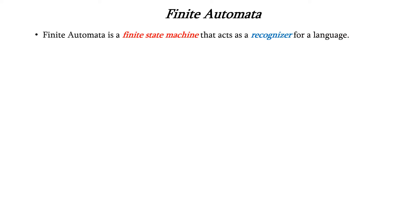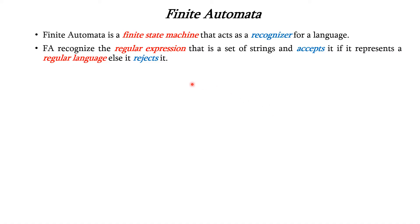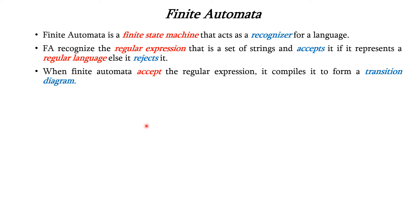What is a finite automata? It is a finite state machine that acts as a recognizer for your language. The FA will recognize the regular expression — it is a set of strings — and accepts it if it represents your regular language. Otherwise, it will reject that regular expression.